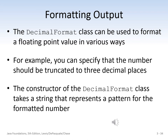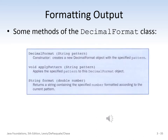Next, we'll take a look at the DecimalFormat class, which is used for formatting floating-point values. You can specify that the number be output to a certain number of decimal places. The constructor of the DecimalFormat class takes a string representing a pattern for the formatted number and outputs the appropriately formatted number. Here we see three methods: the constructor, which creates a new DecimalFormat object given the specified pattern; applyPattern, which applies the specified pattern to the decimal format object; and format, which returns a string containing the number formatted according to the current pattern.